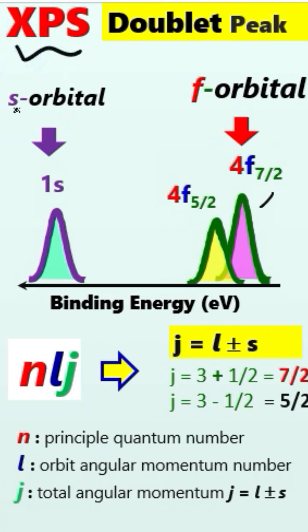In XPS analysis, you will always see a single peak for s-orbitals, while there are two peaks for f-orbitals. Let me show you why there are two peaks.